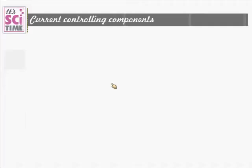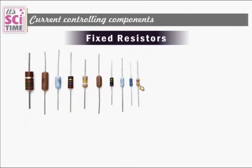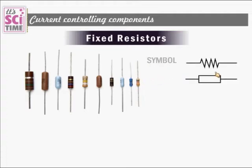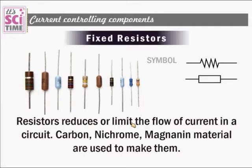Current controlling components — fixed resistors. There are a number of resistors shown in this picture. They can decrease the current flow. There are two symbols; either can be used — the most common is the zigzag line. Resistors reduce or limit the flow of current in a circuit. They are made of carbon, nichrome, or manganin materials.